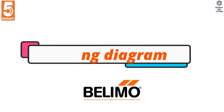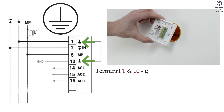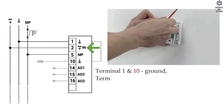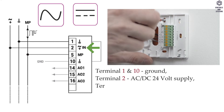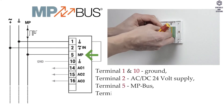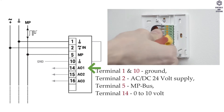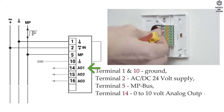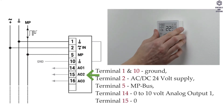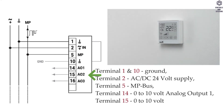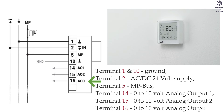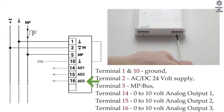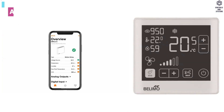Wiring diagram: Terminal 1 and 10 is ground. Terminal 2 is AC or DC 24 V supply. Terminal 5 is MP bus. Terminal 14 is 0 to 10 V analog output 1. Terminal 15 is 0 to 10 V analog output 2. Terminal 16 is 0 to 10 V analog output 3.